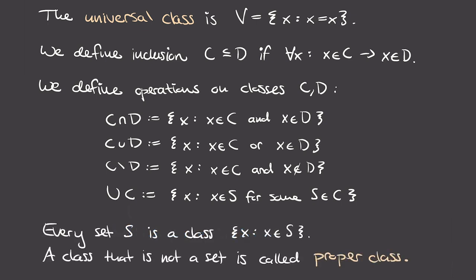Every set s is in fact a class, defined by the formula: all x such that x is an element of s. On the other hand, there are classes that are not sets — for instance, the universal class is not a set — and such classes will be called proper classes.